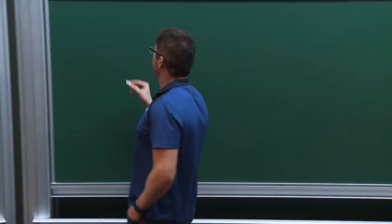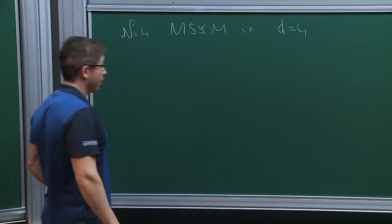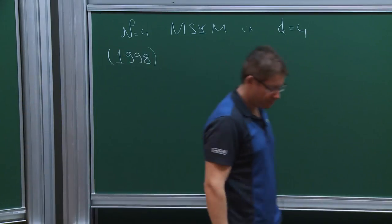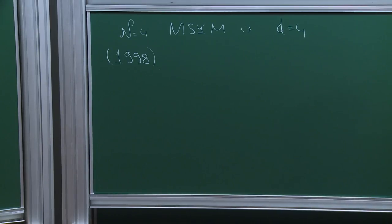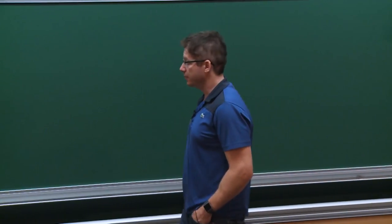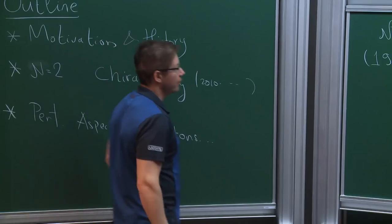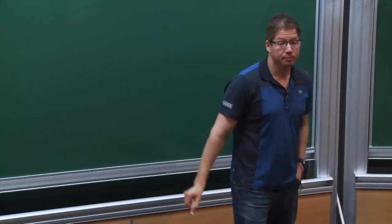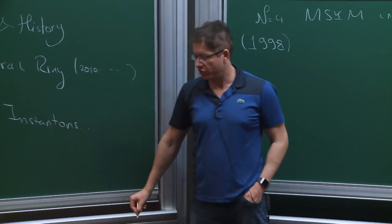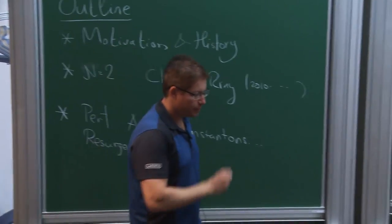I'll start with some history involving the N=4 maximally supersymmetric Yang-Mills theory in four dimensions. This subject started its life around 1998, when the first paper on the subject appeared in the context of maximally supersymmetric Yang-Mills theory. We'll discuss modern developments from 2010 onwards, where people managed to generalize many statements to N=2. N=2 appears to be much more interesting — there are various perturbative aspects, instantons, resurgence. I'll mention connections to resurgence and many other questions of interest.